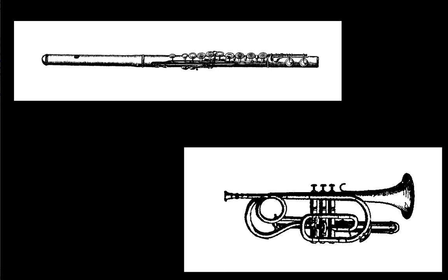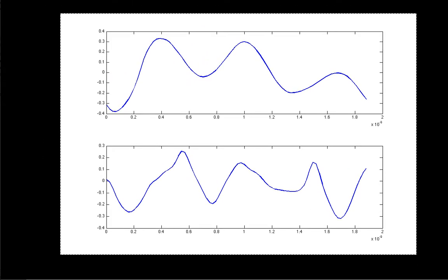One way to look at this is to look at the actual waveforms created by the trumpet and the flute. I've taken a digitized sample of the waveforms — synthesized trumpets and flutes — and plotted them on this graph. The top waveform is the flute, the bottom is the trumpet. Both instruments were playing the same note, meaning they were playing at the same fundamental frequency.